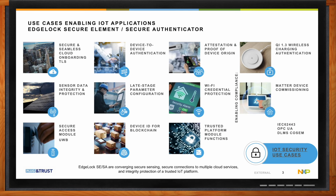Secure and seamless cloud onboarding — very often using the TLS protocol — is a use case found in almost all applications like industrial, computing, smart home, and IP cameras. The same applies to device-to-device authentication. Attestation and proof-of-device origin is a use case getting more important to ensure the proof-of-device origin. Sensor data integrity and protection is a use case across all kinds of applications dealing with sensors. Late-stage parameter configuration is where parts with different destinations need different configurations done at a late stage — maybe even in the field — and it is absolutely key that this configuration is secure and authentic.